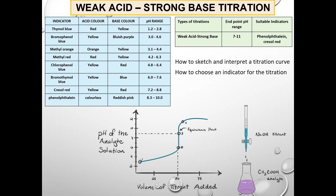Here, we will study the titration between a weak acid and a strong base. We will use the example of ethanoic acid, a weak acid, and sodium hydroxide, a strong base. We are going to study how to sketch and interpret a titration curve and also how to choose an indicator for the titration between a weak acid and a strong base.